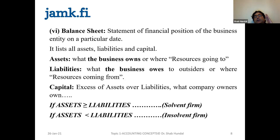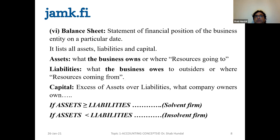In the income statement, you have profit and loss. You can be having losses but still exist, because you can recover losses in the future from future profits. But you cannot afford to have liabilities exceeding assets, because the day it happens, the company collapses, is declared bankrupt, transferred to the registrar of companies, and the bankruptcy procedure starts.